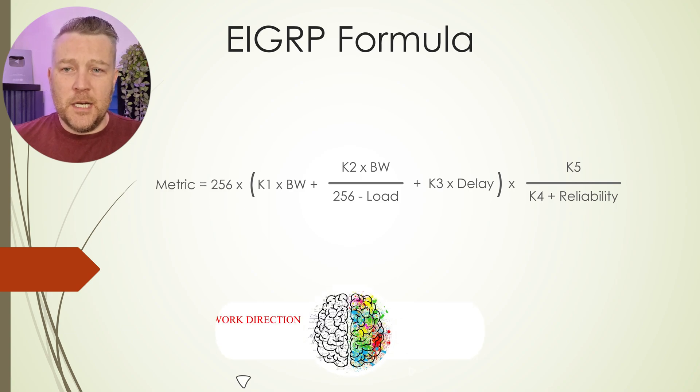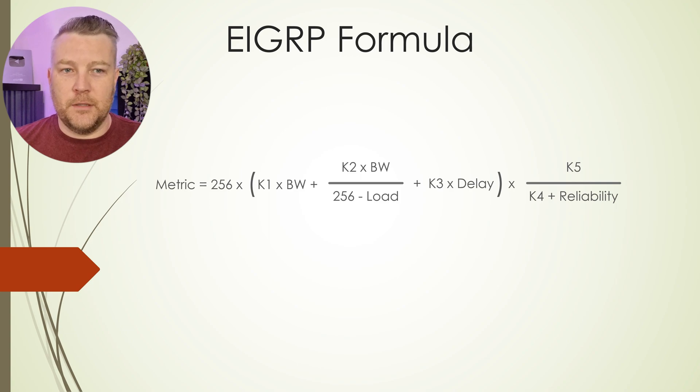So as you can see, EIGRP can use bandwidth, it can use delay, load, and reliability. You've probably seen these before while you've been studying through CCNP or CCNA.